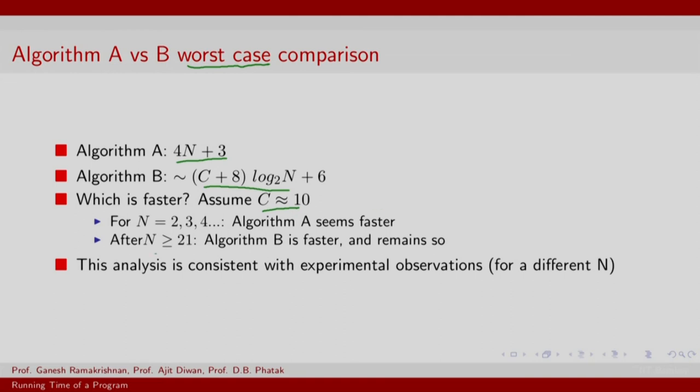But for n greater than equal to 21, algorithm B suddenly becomes faster. Now, the most important point to highlight here is that algorithm B becomes faster and remains so thereafter, which means for all values of n exceeding 21 or 20, basically you do not have to bother about algorithm A. So there is a kind of monotonicity in terms of improved performance, and this actually is consistent with experimental observations for different values of n. In fact, this is the kind of analysis that is desirable. You get your insights and set your expectations before you even perform the experiment.